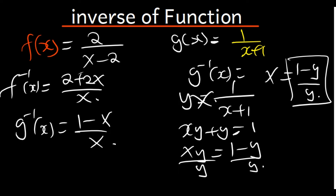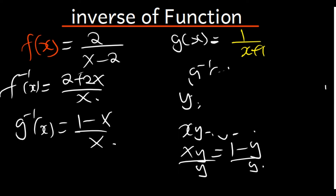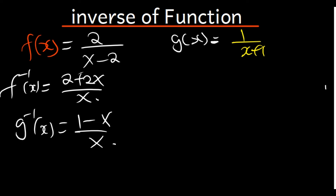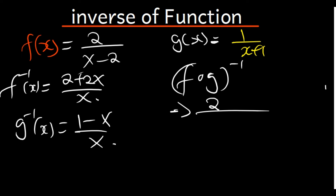They can also ask us to find the inverse of f of g — meaning we find f(g(x)) first, then find the inverse of that result. This is a composite function. In f(x) = 2 over (x minus 2), wherever there is x I put g(x), which is 1 divided by (x plus 1). So we get 2 divided by (1 over (x+1)) minus 2.